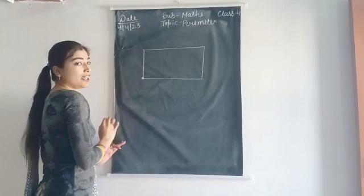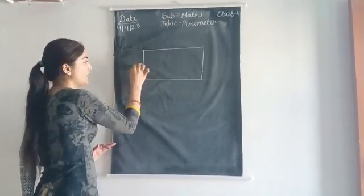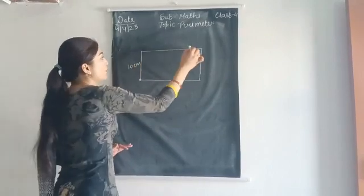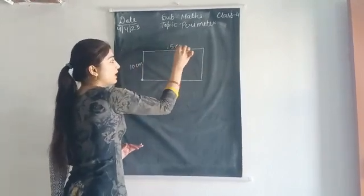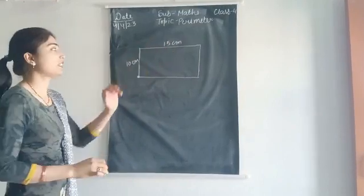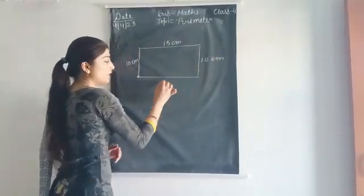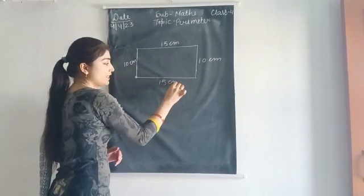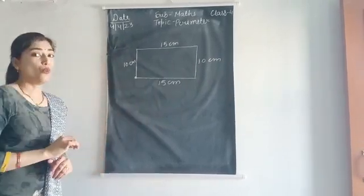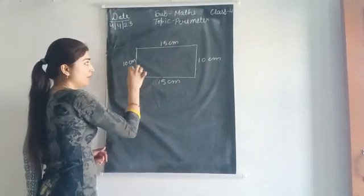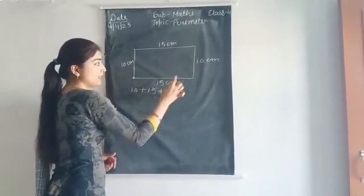Measure this side. This will be 10 cm. And this side will be 15 cm. After measuring with the scale, it finds that it's 15 cm. Same, this is 10 cm. Same, this is 10 cm. And this is 15 cm. So what is the total length? Add all these 4 lengths: 10 plus 15 plus 10.